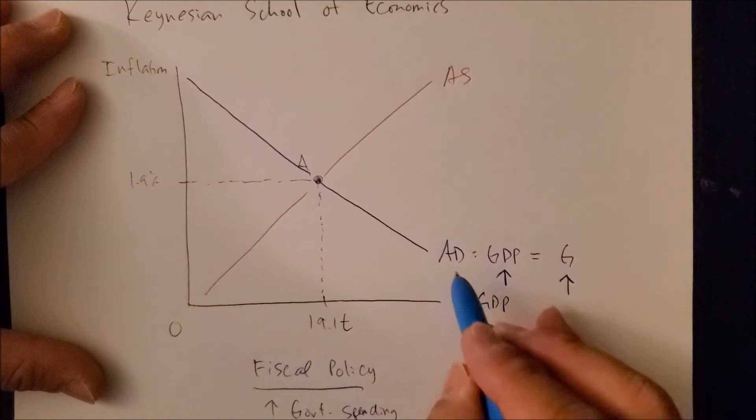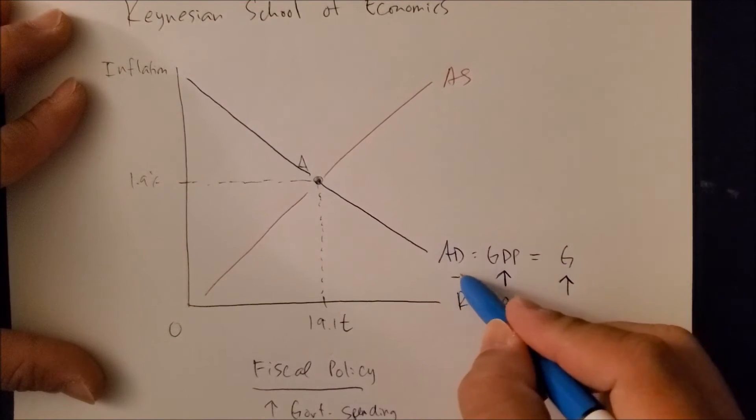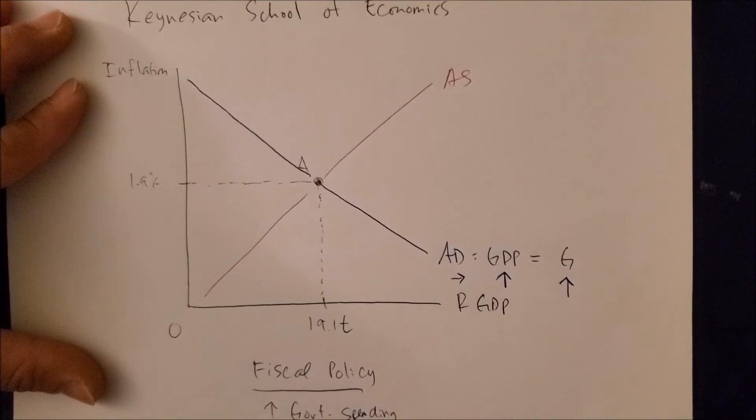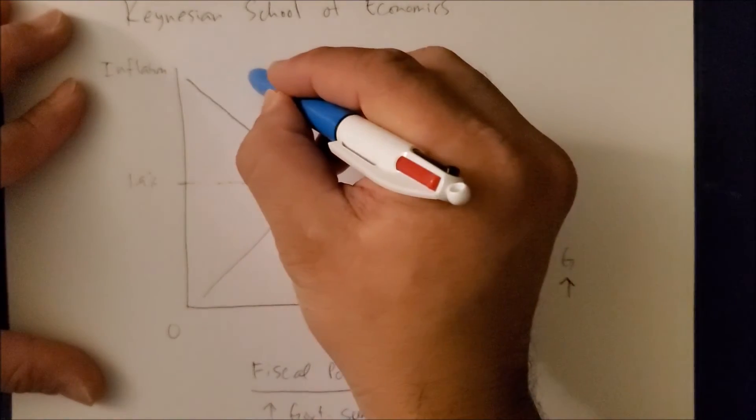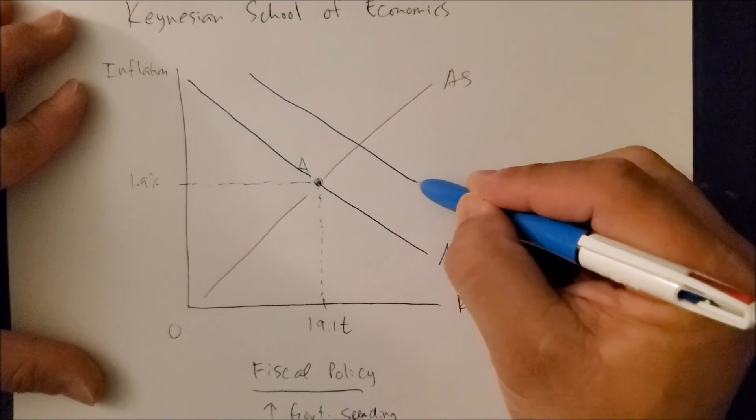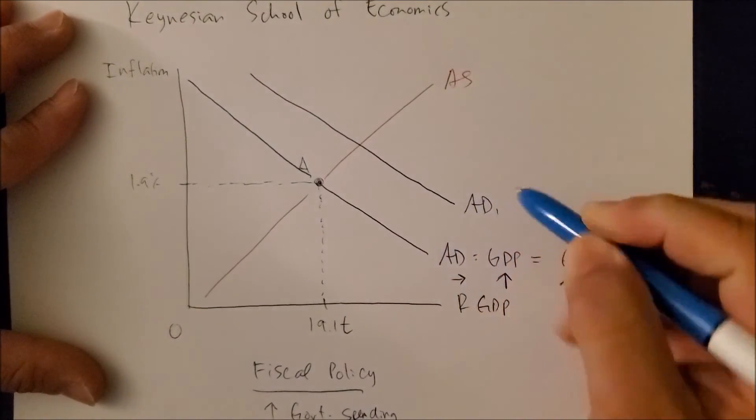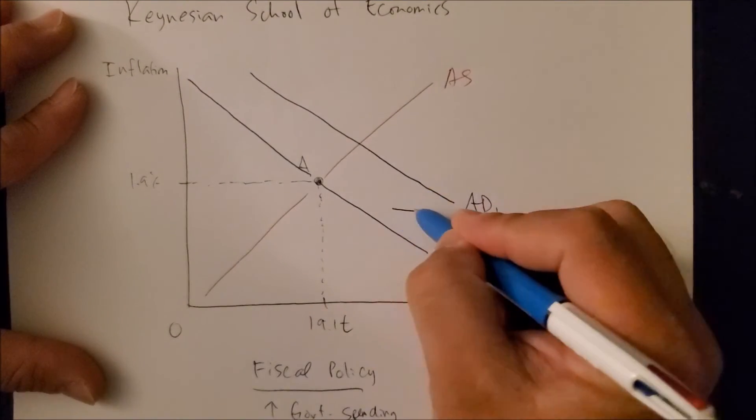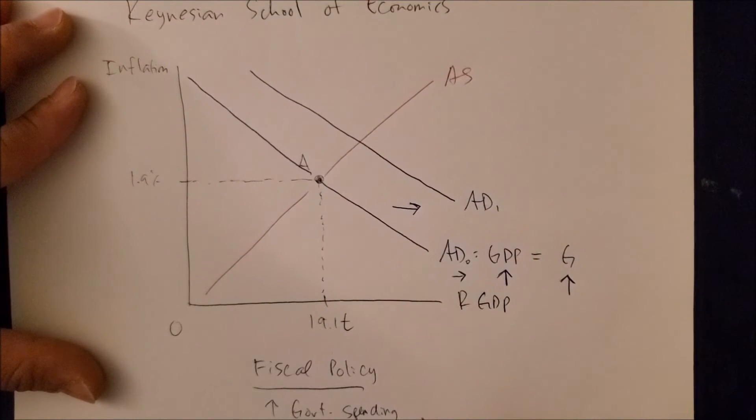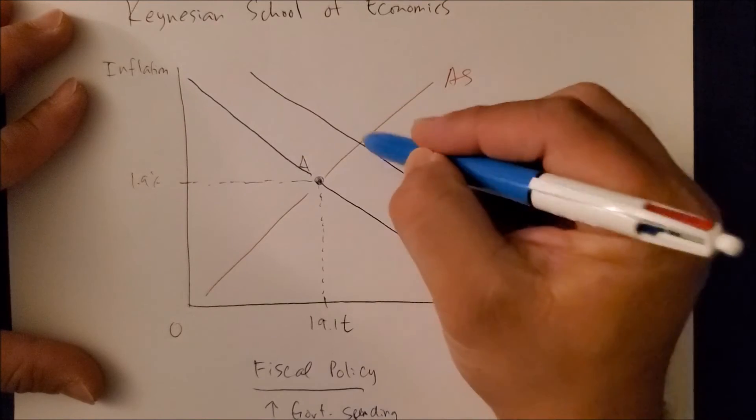G is going to increase, and since G and GDP are directly related, GDP will also increase. As GDP increases, AD is going to shift to the right, and now we can draw a new AD curve called AD1 and show that we are shifting AD to the right. Now I want you to see the new equilibrium point, point B, right here.